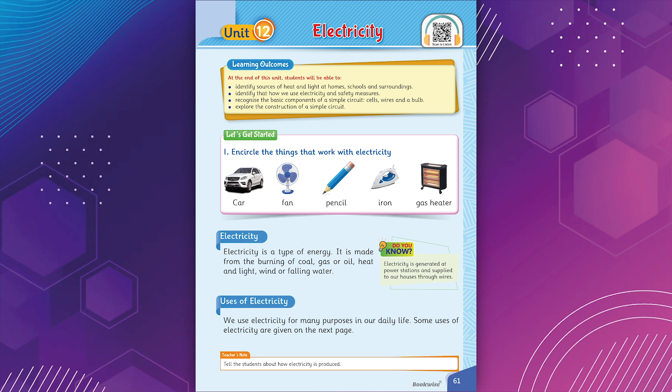Electricity is a type of energy. It is made from the burning of coal, gas or oil, heat and light, wind or falling water.